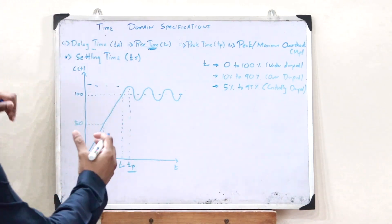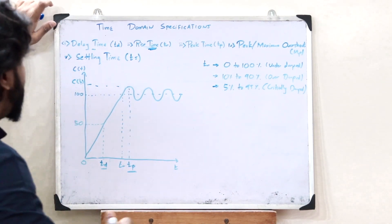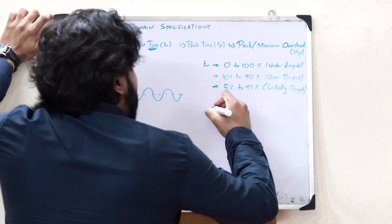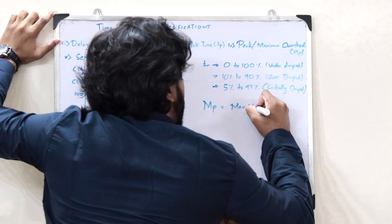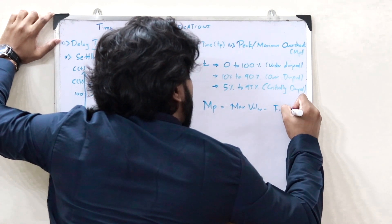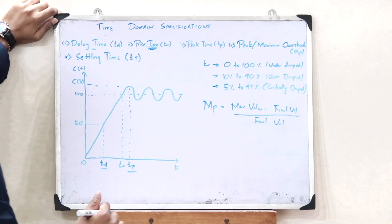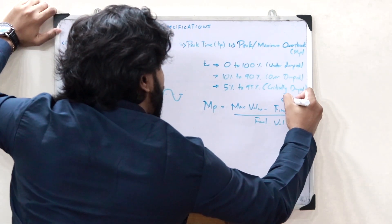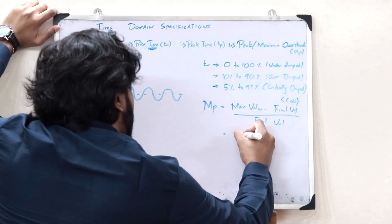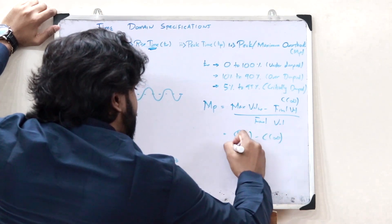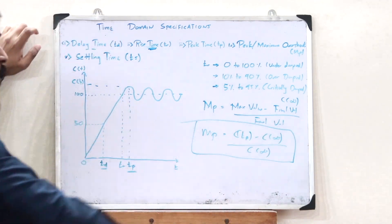Let us assume that the response value of this particular control system at the peak value is C(TP). Then the maximum overshoot MP is given as: MP = (maximum value minus final value) divided by the final value. The final value is simply the response of the control system at infinite time, that is C(∞). Therefore, MP = [C(TP) − C(∞)] / C(∞). This is the value of the maximum overshoot.